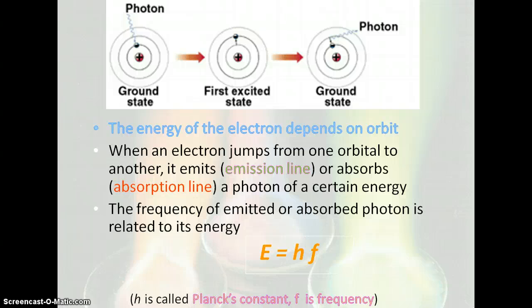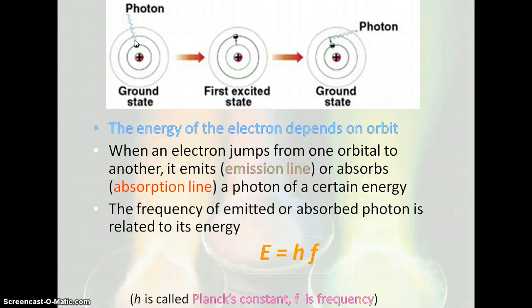Here's a closer picture of that. The energy of the electron depends on the orbit that it's in and the orbit that it's going to. So when it jumps from one orbital to another, it emits — that's where you get your emission line — or absorbs a photon of a certain energy. The frequency of the emitted or absorbed photon is related to its energy.